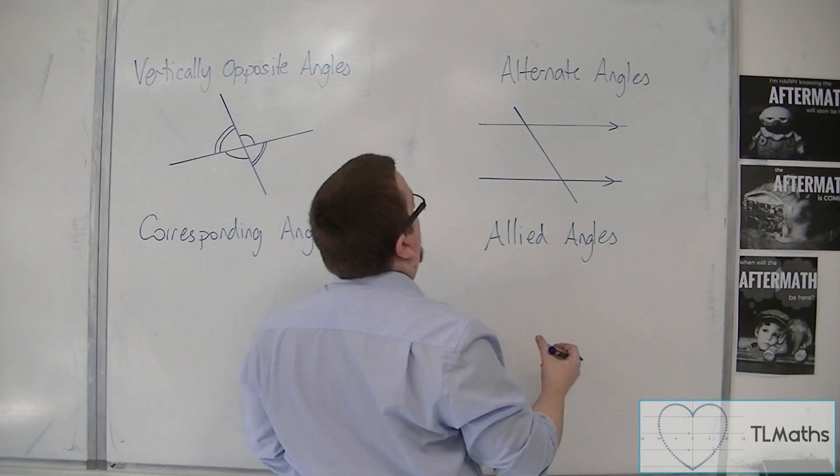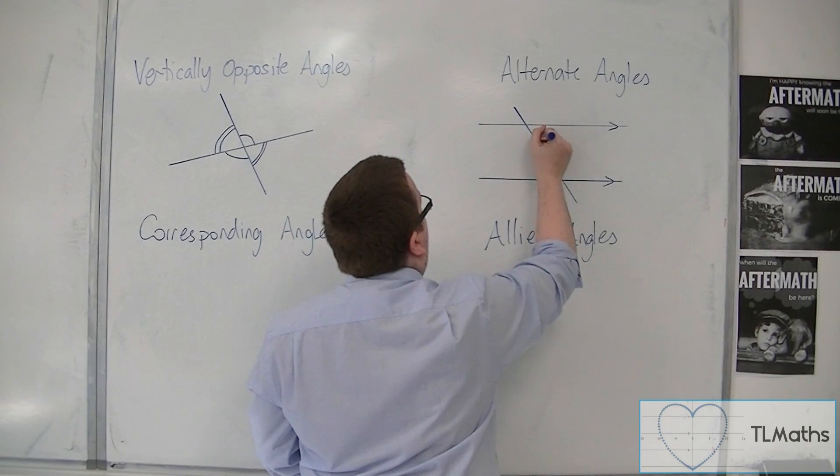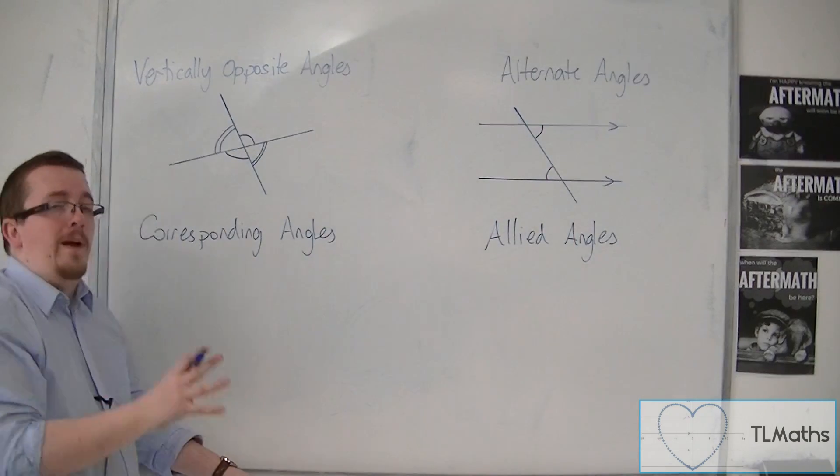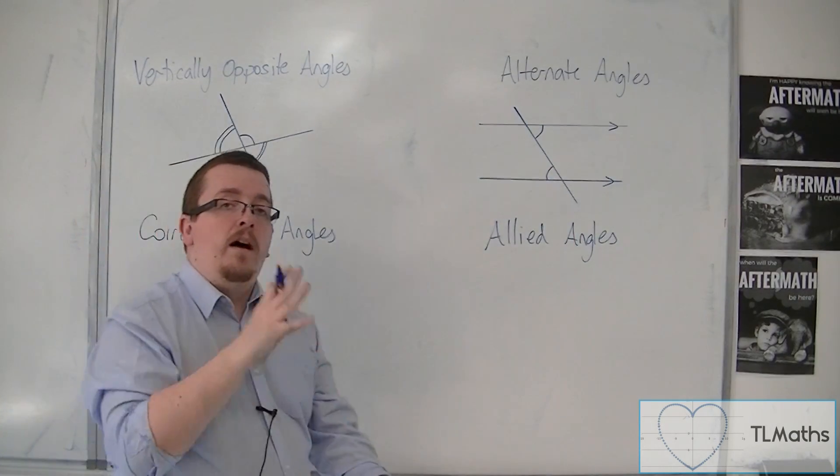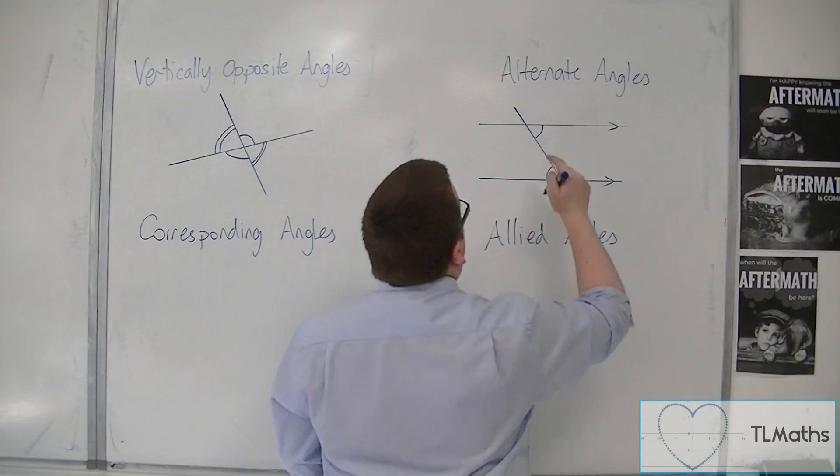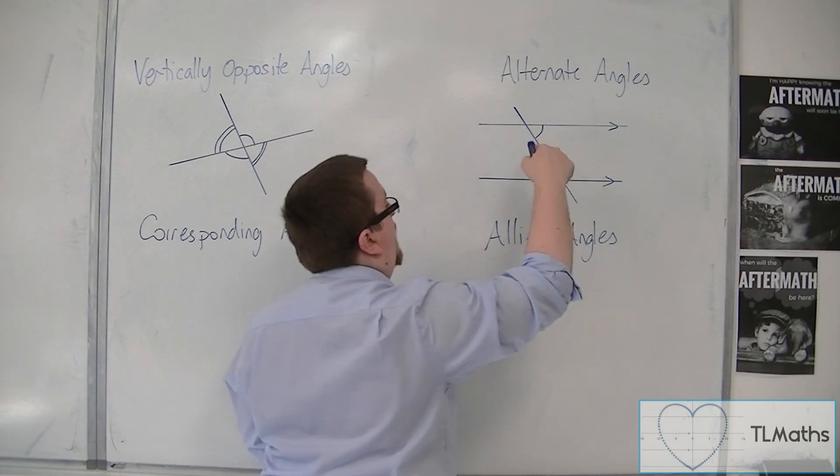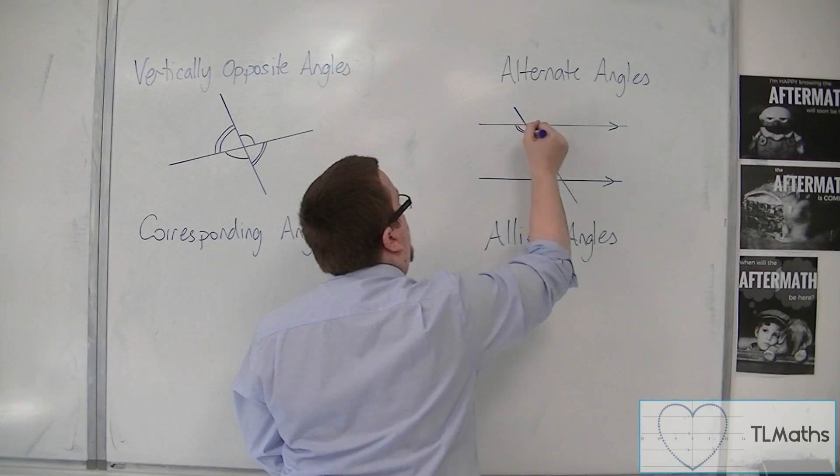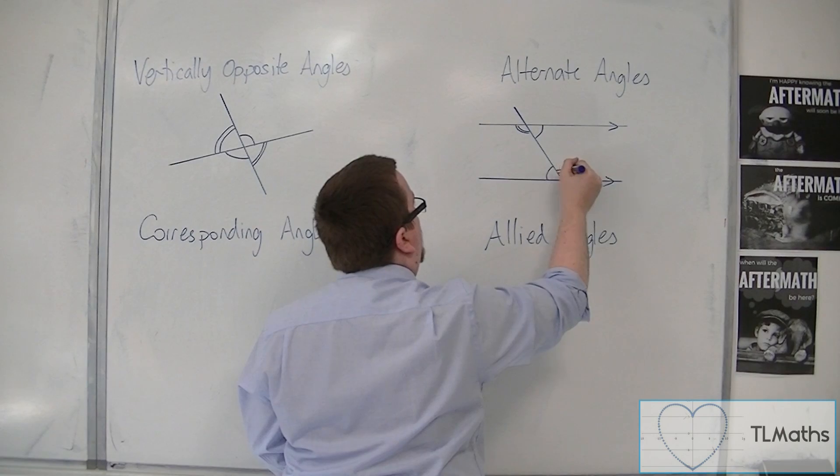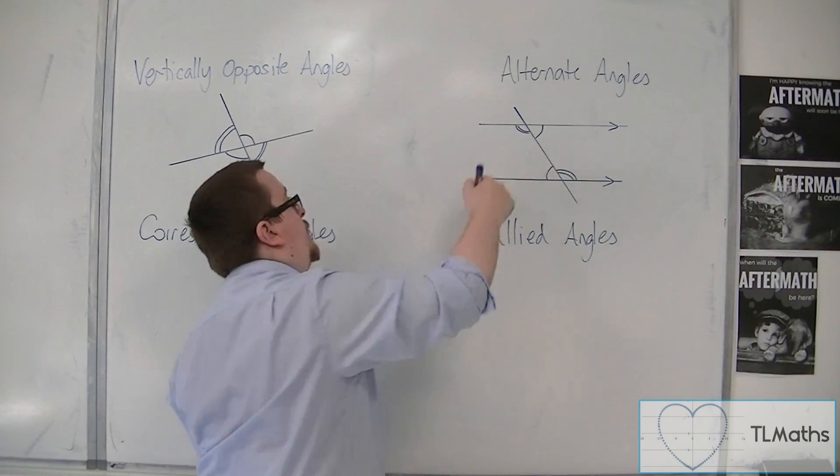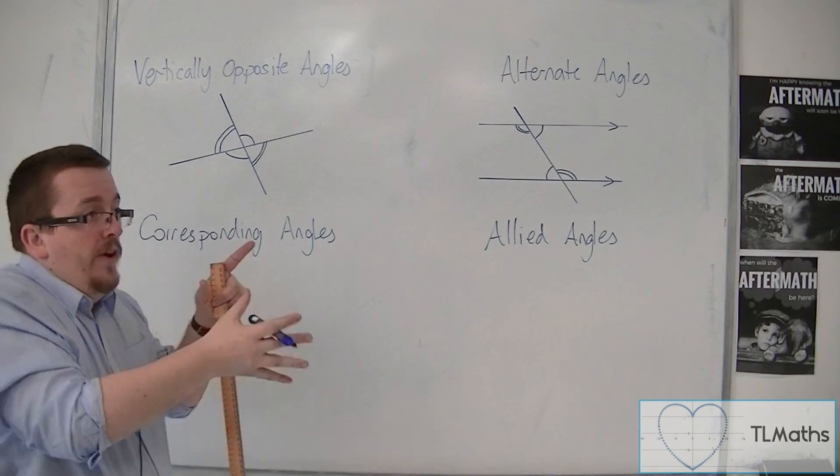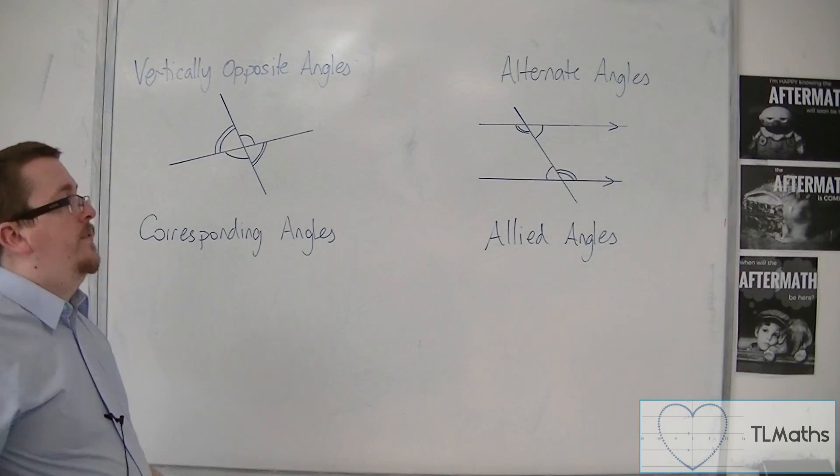The alternate angles are these. So they are referred to as alternate angles, and they are equal to one another. So if this is 60 degrees, then that is 60 degrees. Likewise, this angle will be the same as that angle. And so they are also known as alternate angles. They are on alternating sides, effectively.